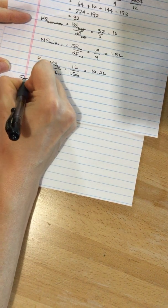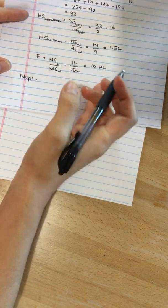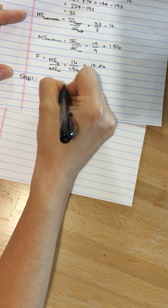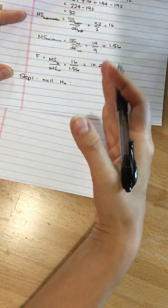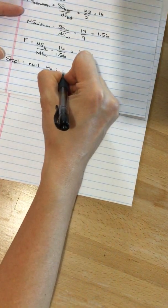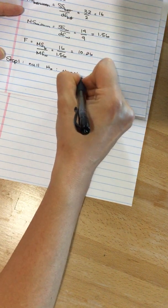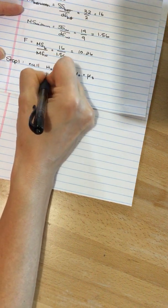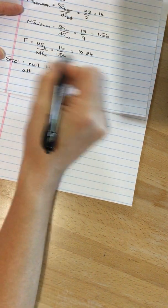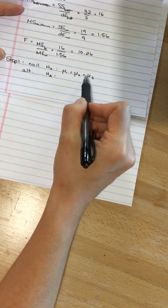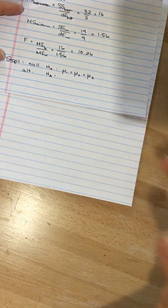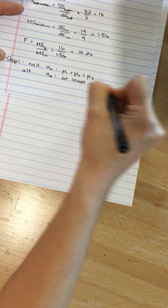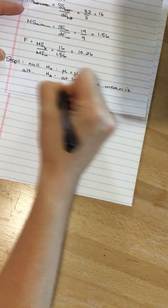Step 1 is to state your hypotheses. The null, H0, is that all of the population values, all of the means, are equal to each other. The alternate is that at least one of these differs. We can't write it out like this though, because we'd have to write too many versions. So, at least one mean is different.